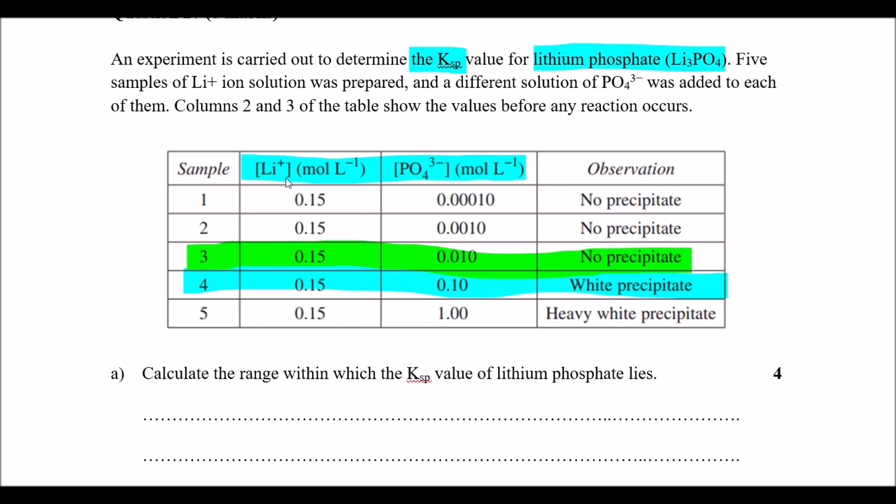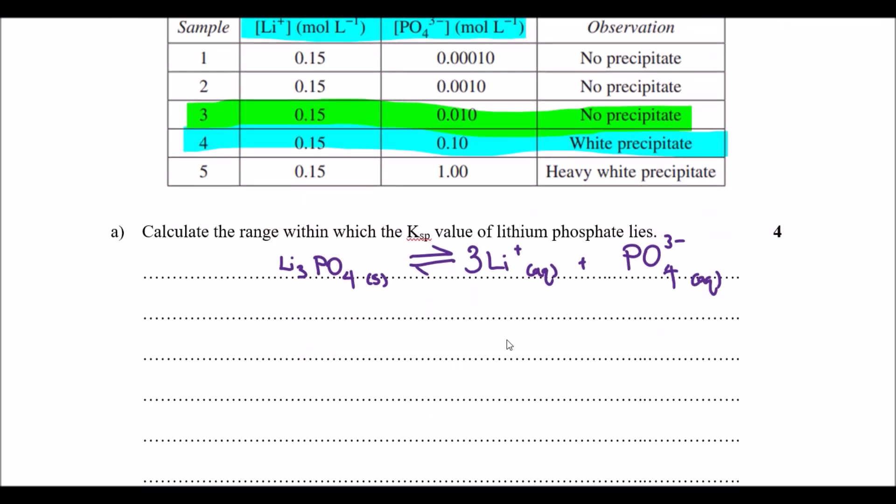What we need to do is write the relevant dissociation equation. I have lithium 3-phosphate, so that is a solid and that dissociates into lithium plus aqueous solution and phosphate three minus aqueous solution. As you can see from the formula here we have a lithium of three and we also have only one phosphate ion here.